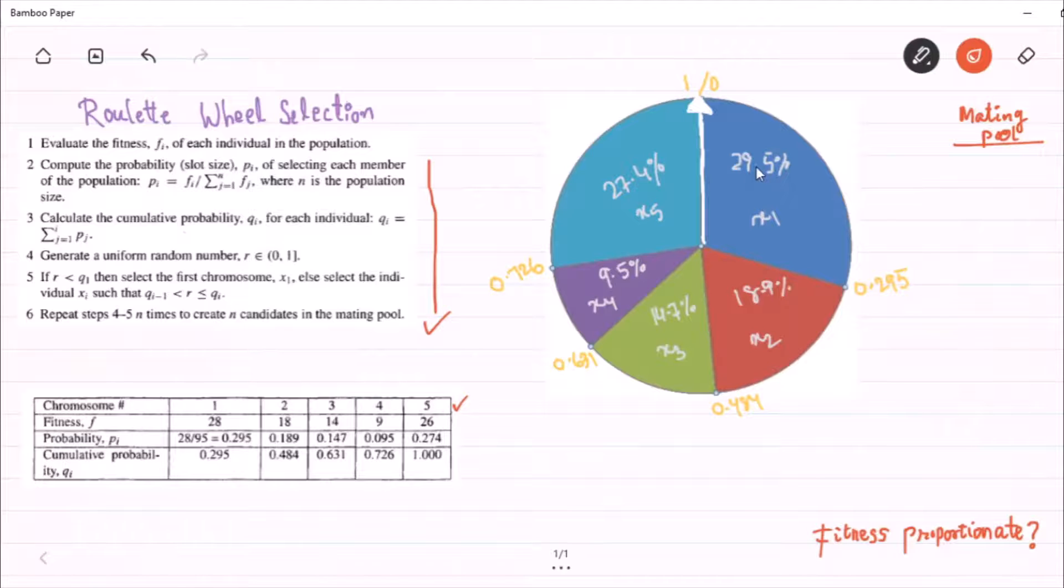And this wheel is partitioned based on the fitness values. So, it can be said that chromosome 1 occupies 29.5%, chromosome 2 occupies 18.9%, chromosome 3 occupies 14.7%, chromosome 4 occupies 9.5% and chromosome 5 occupies 27.4%.